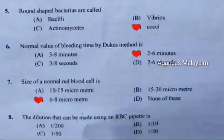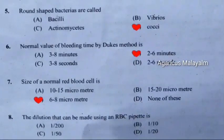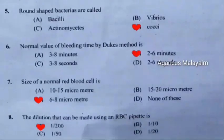Eighth question: The dilution that can be made using an RBC pipette is. Correct answer is Option A: 1 in 200.